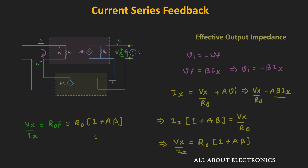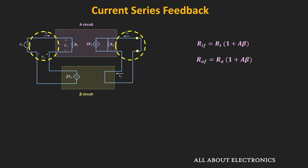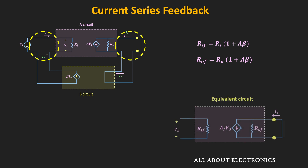In general, because of the series connection on both input and output sides, the input and output impedance of this current series feedback amplifier will increase by the factor of 1 + Aβ. This is the equivalent circuit of the current series feedback amplifier, where Rif is the input impedance with feedback, Rof is the output impedance, and Af is the transconductance gain with feedback. The increase in both input and output impedance is the desired thing for a transconductance amplifier.